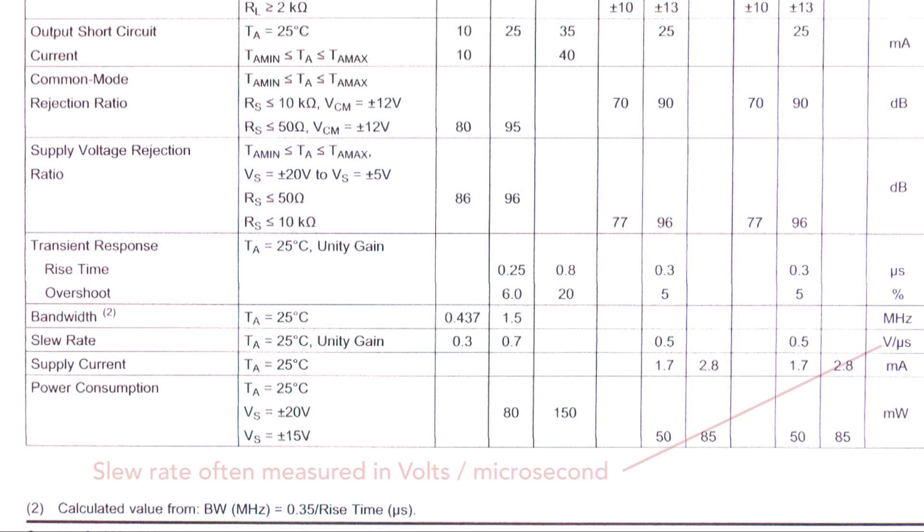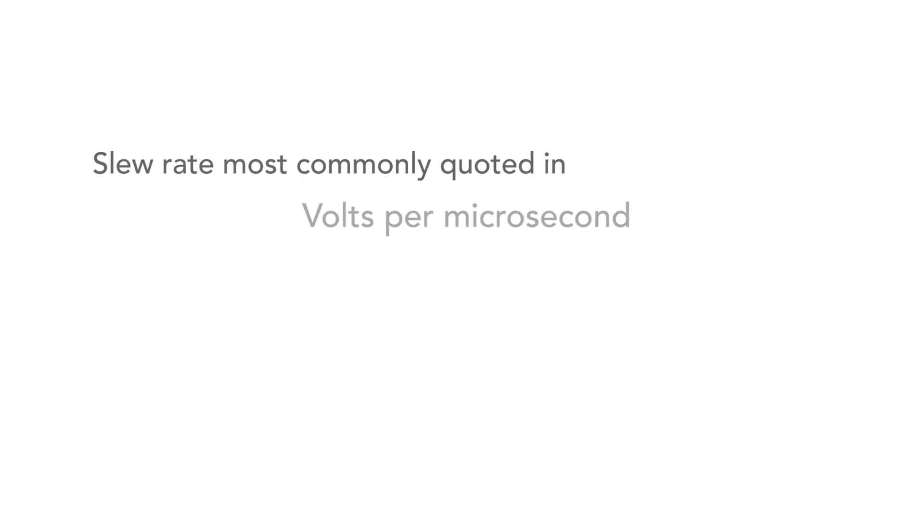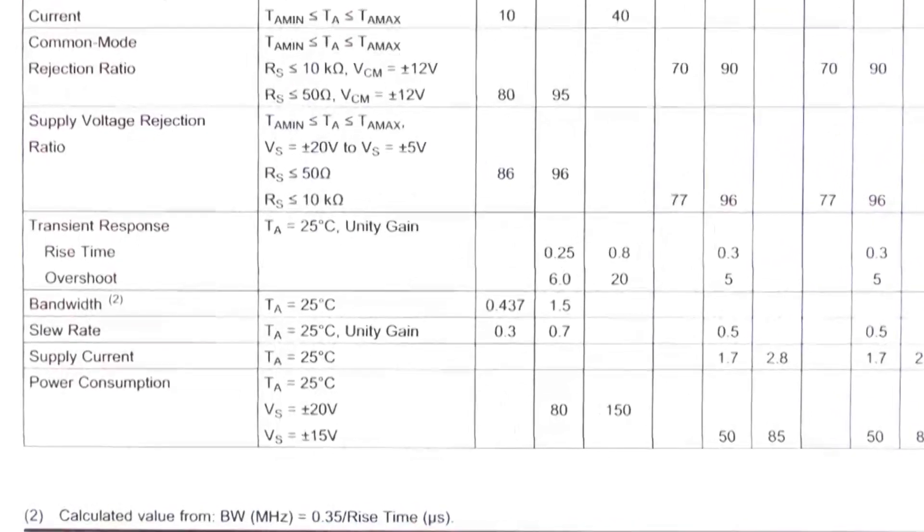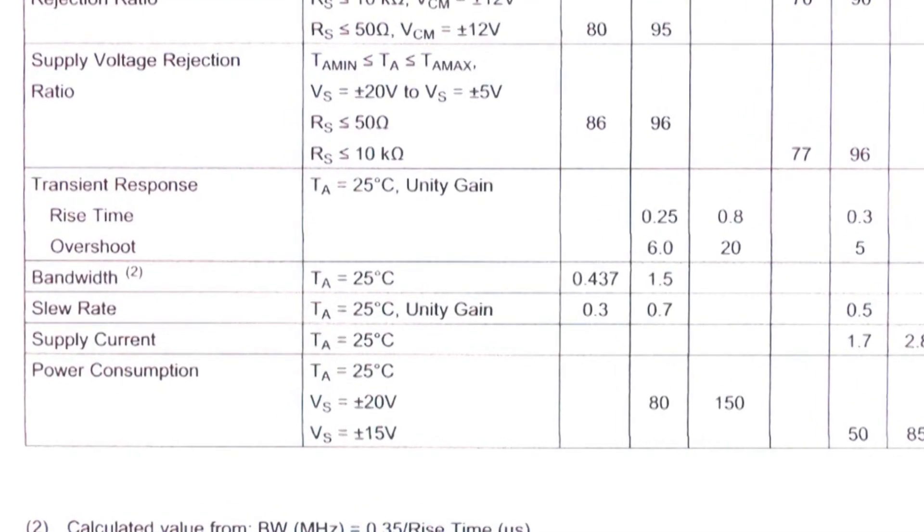Slew rate is quoted in various data sheets in terms of the voltage change in a given amount of time. Typically values are given in terms of volts per microsecond, or in the case of some very fast amplifiers, in terms of volts per picosecond. As it's so important, it is quoted in virtually all op-amp data sheets.